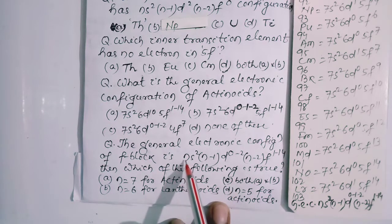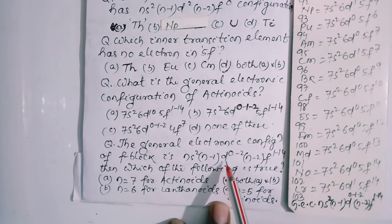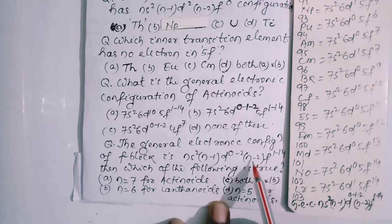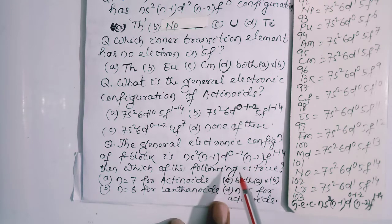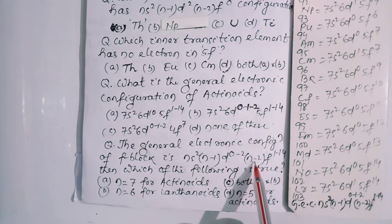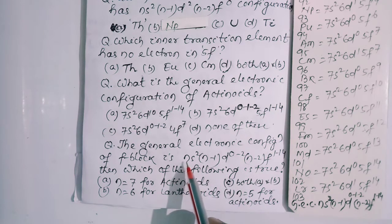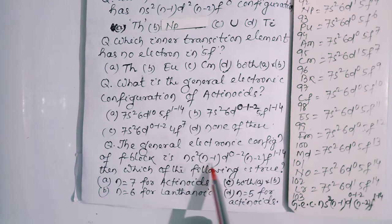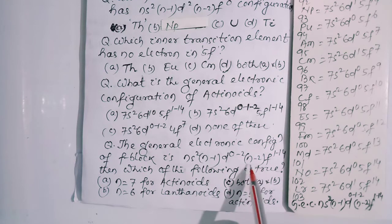In case of actinoids, N is equal to 7. And for D, it is 6. That is penultimate. For F, it is anti-penultimate. So when N is equal to 7, it is 6, it is equal to 5. When N is equal to 6, it is 5, it is 4. This is penultimate. This is anti-penultimate.